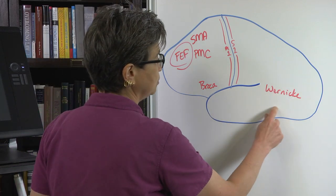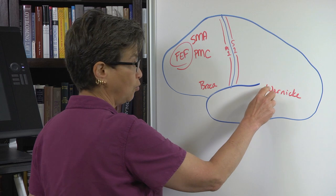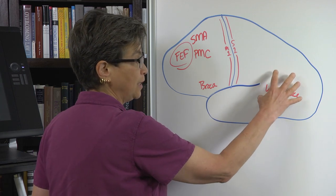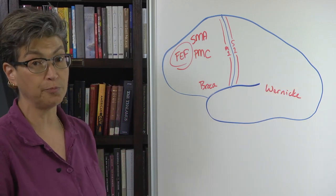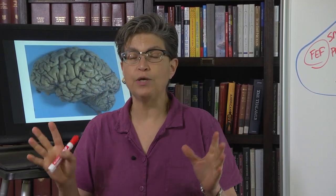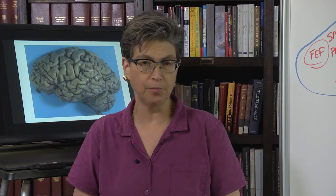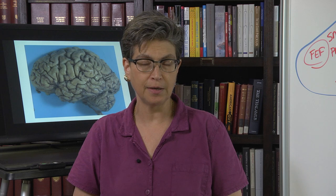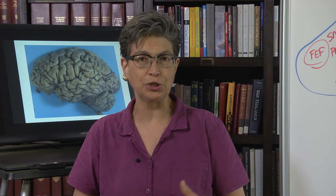This is Wernicke's area, back in the temporal-parietal junction, and it is responsible for language comprehension. Even when we include Broca's area, frontal eye fields, premotor cortex, and supplementary motor area, it still doesn't answer the question of what we're going to do, or whether we're going to do anything at all.